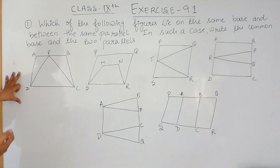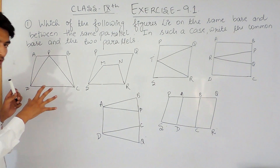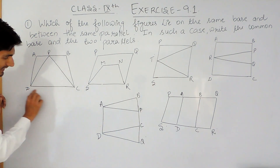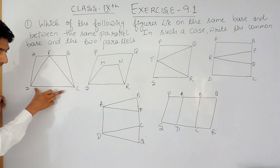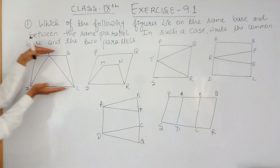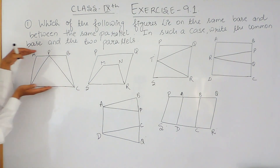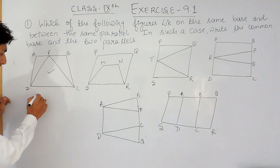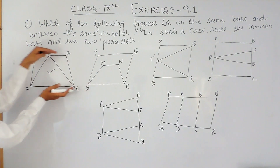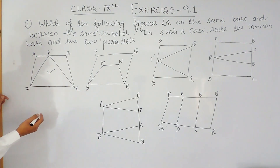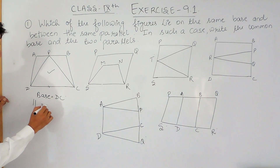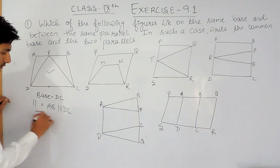If I look at this figure closely, there are two figures. The first is trapezium ABCD and the second is triangle PCD. These two figures are lying on the same base, that is DC. Both figures have the same base and they lie between the same parallels. So these two figures are lying on the same base and between the same parallel. The base here is DC and the two parallel lines are AB and DC.